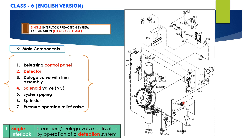Apart from these components, there are various other components such as air compressors, check valves, butterfly valves, restricted orifice, alarm bell, and pressure switches. All of these are required for proper functioning of the system.